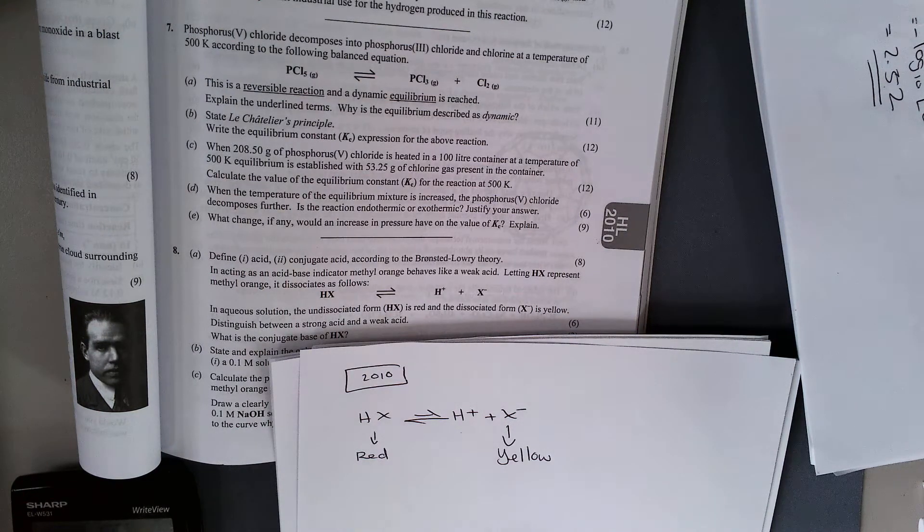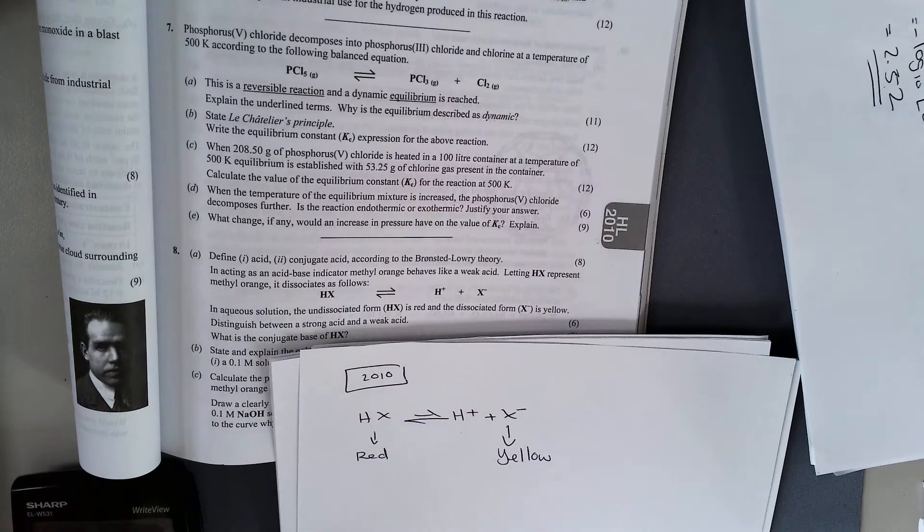Using Bronsted and Lowry, strong acid is a good proton donor. Weak acid is a poor proton donor.